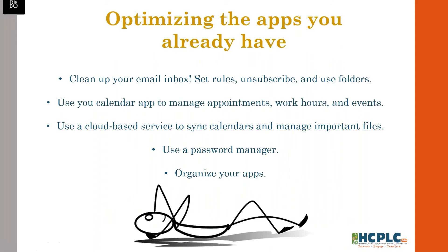So, optimizing the apps that you already have. This is a big one — clean up your email inbox. Mine, before I started cleaning it up, was a mess. You get emails for everything: important emails for doctor visits, important documents you need to sign, but also spammy emails from places like Walgreens and Target. To make your life easier, set rules. Rules in email are ways of filtering certain messages in the inbox using keywords.